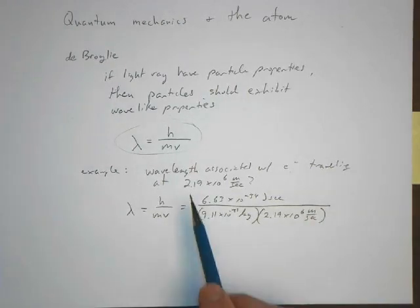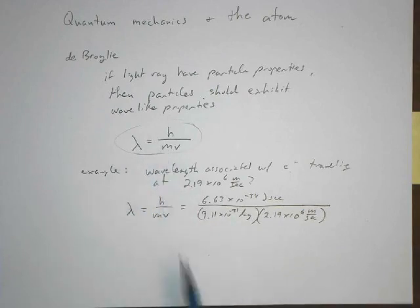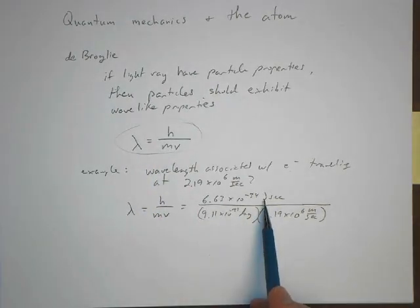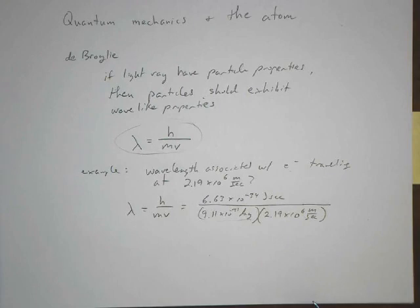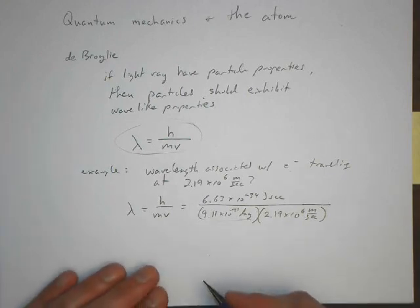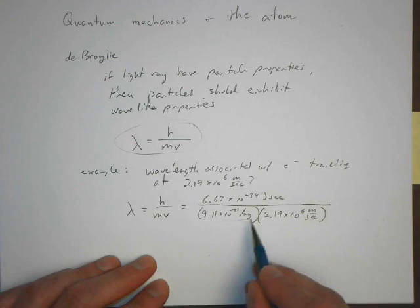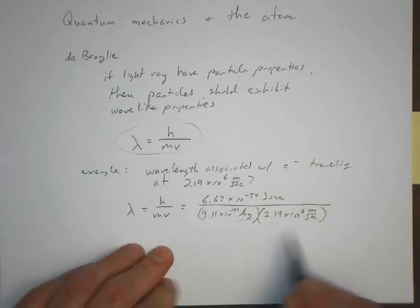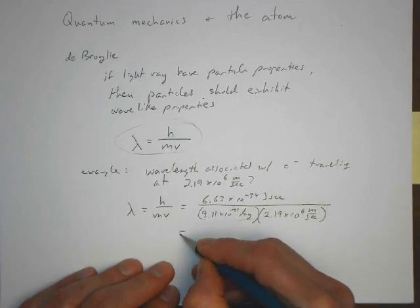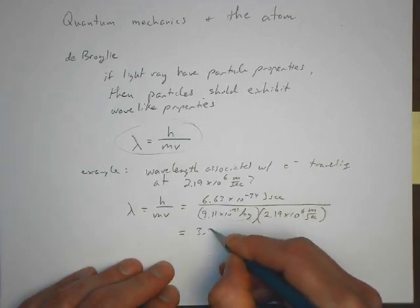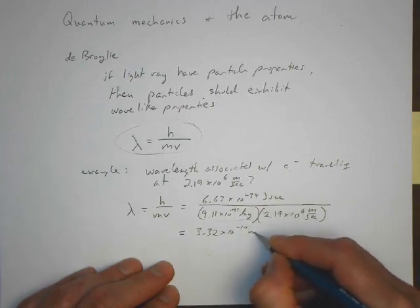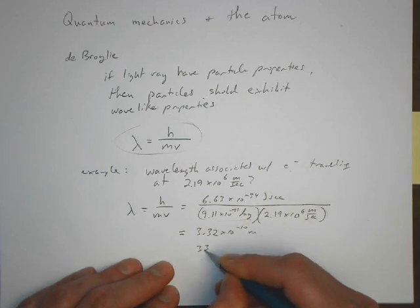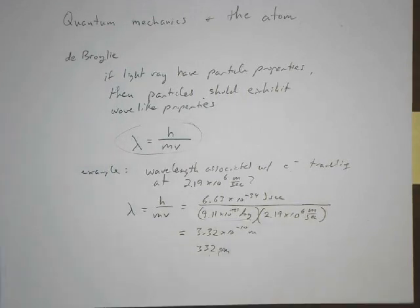Now, something to keep in mind when you're doing problems with this equation. We have units of joules here, kilograms meters squared per second squared. So we have to make sure our mass is in kilograms and our velocity is in meters per second. Otherwise, the units will be off, and you'll be off by some factor of a thousand, probably. So don't use grams or centimeters or whatever else. Make sure you're using the correct units. In this case, we'd end up putting this into our calculator. 3.32 times 10 to the minus 10 meters, or another way to put it would be 332 picometers.